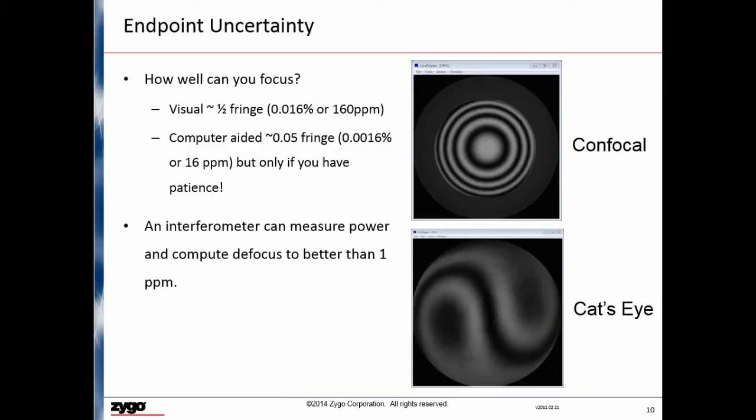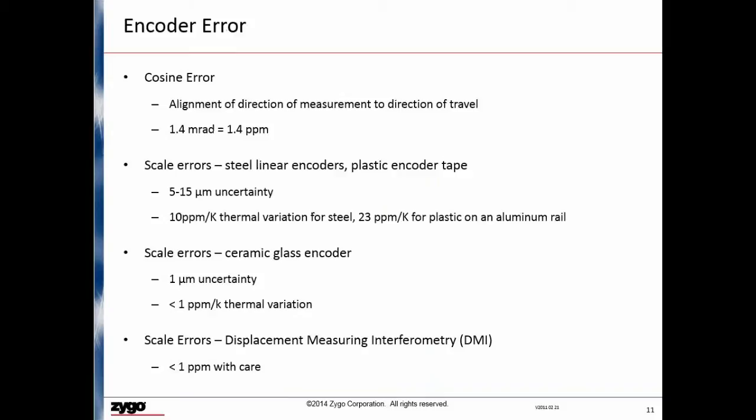The final error we have to discuss is encoder error. Encoder errors can be broken down into cosine errors and scale errors. The cosine error is the error caused by the misalignment between the encoder axis and the direction of travel of the stage. In other words, if we were to put the encoder tape onto the guide rail at a slight angle, the measured distance would be greater than the distance traveled by the stage by a factor of 1 over the cosine of the angle error. It turns out, though, that this is quite small. One part per million is equivalent to 1.4 milliradians of misalignment, or 1.4 millimeters over a 1 meter travel distance. Alignment to better than this level of precision is not difficult, so this error is not usually significant.